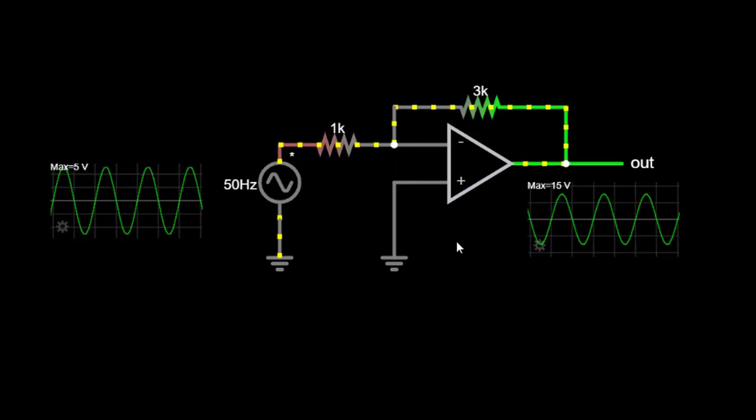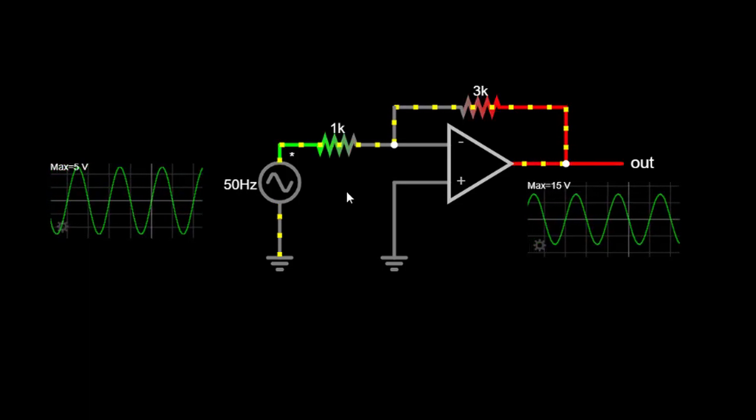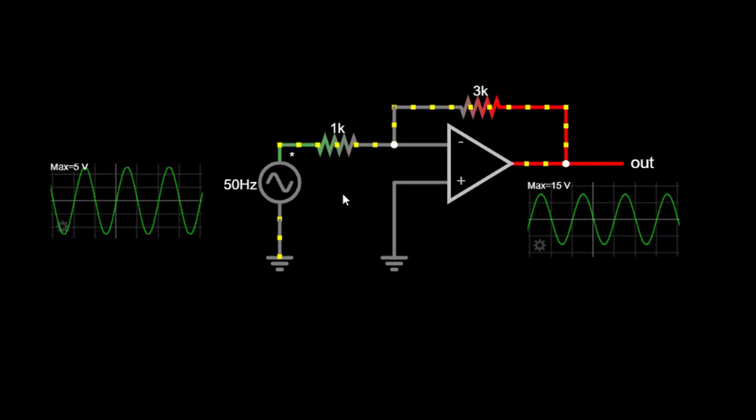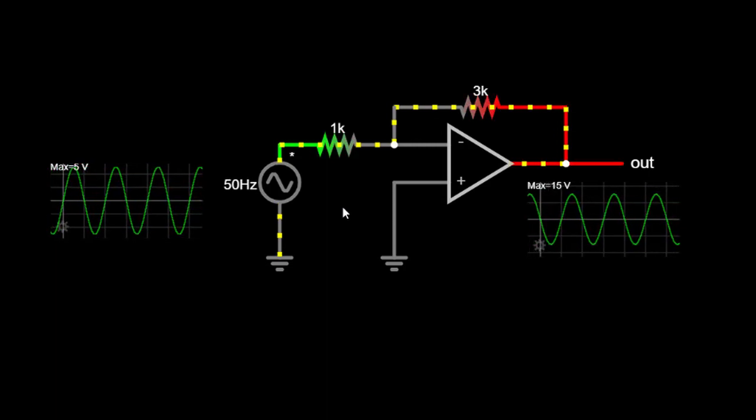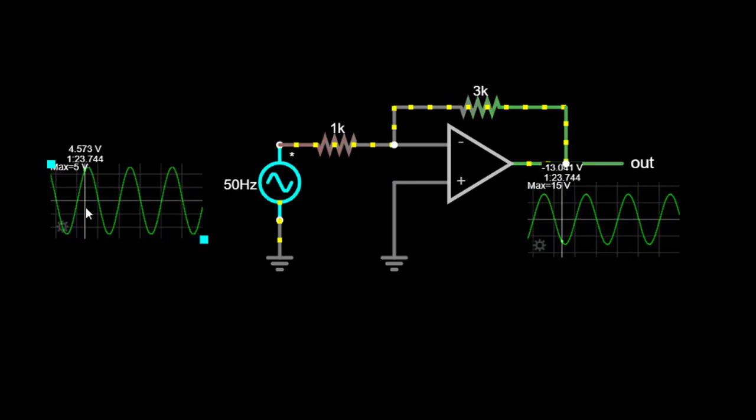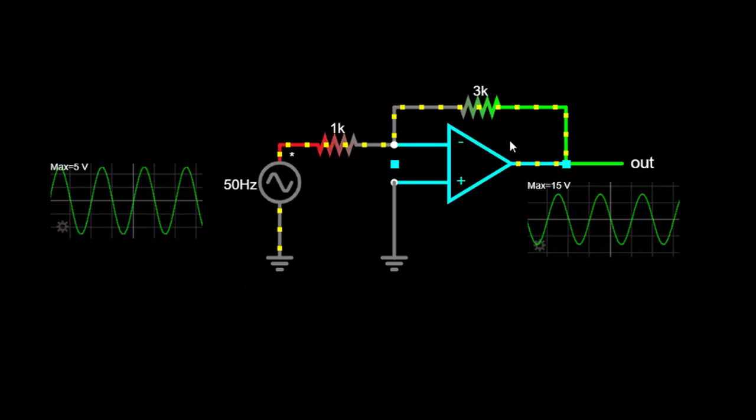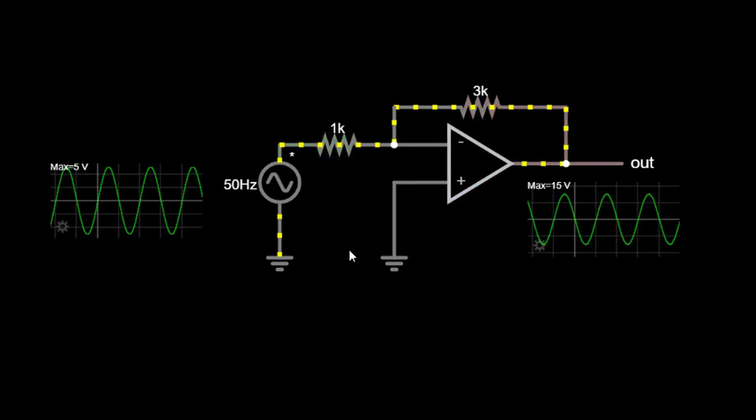So, what exactly is an inverting amplifier? Well, an inverting amplifier is a basic operational amplifier configuration that produces an output signal that is the inverse, or opposite, of the input signal. This configuration is commonly used in various electronic circuits and signal processing applications.